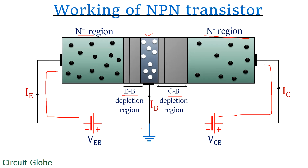The figure clearly shows that the width of the emitter-base junction is smaller as compared to the collector-base junction. The reason behind this is that the emitter-base junction is forward biased, which leads to a thinner depletion region as compared to the collector-base junction which is reverse biased. So basically, when external potential is applied across the terminals of the transistor, majority charge carriers drift across the junction and are responsible for conduction.